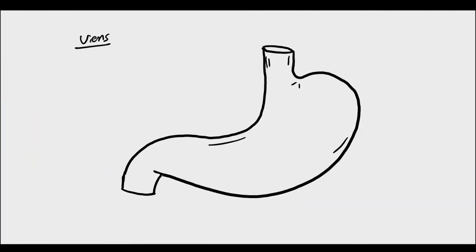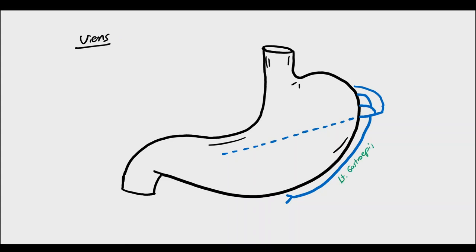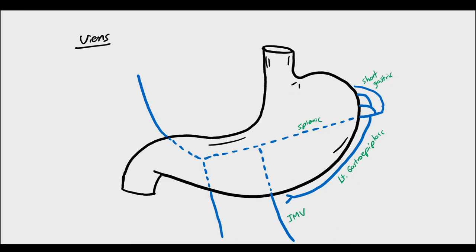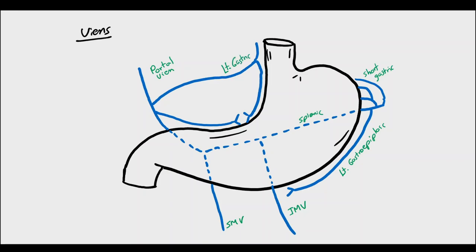Now we will take a look at the venous drainage of the stomach, which in general follows the course of the supplying arteries, with some exceptions. We will start on the greater curvature with the short gastric veins and the left gastroepiploic vein, which both drain into the splenic vein. Along its course behind the posterior surface of the pancreas, the splenic vein receives the inferior mesenteric vein, then unites with the superior mesenteric vein to form the portal vein. The left gastric vein and the right gastric vein both drain directly into the portal vein, while the right gastroepiploic vein drains into the superior mesenteric vein.